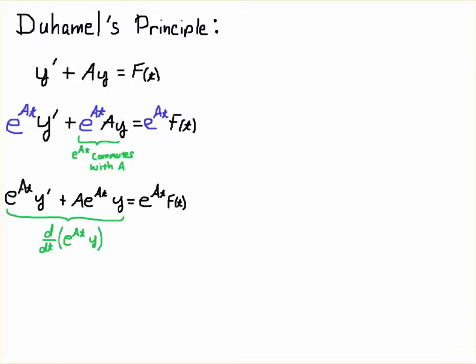Now, remember, in linear algebra, the commutative property is not something we can take for granted in matrix multiplication. AB is not necessarily equal to BA. But with the matrix exponential, e^(At) times A is equal to A times e^(At). So the matrix exponential commutes with A.